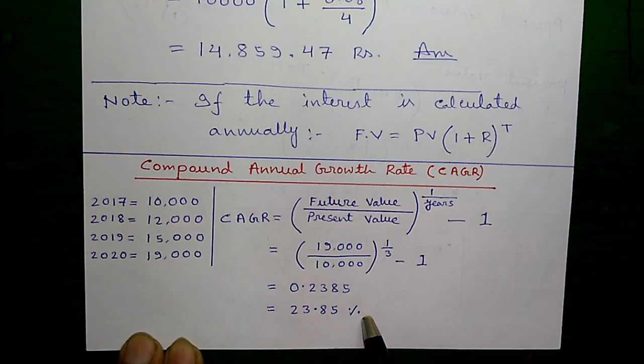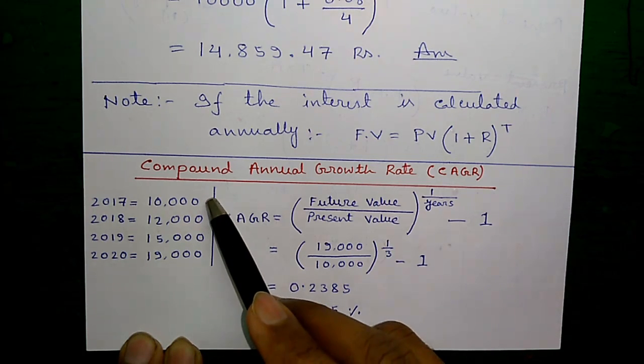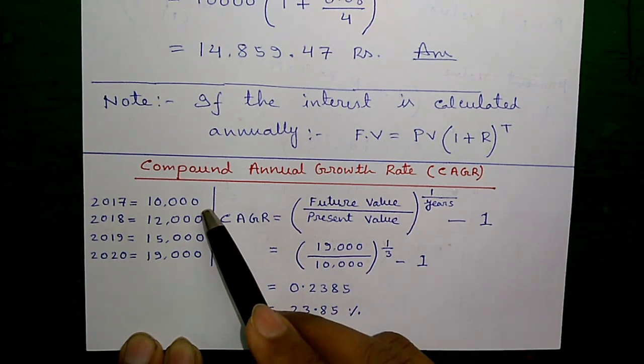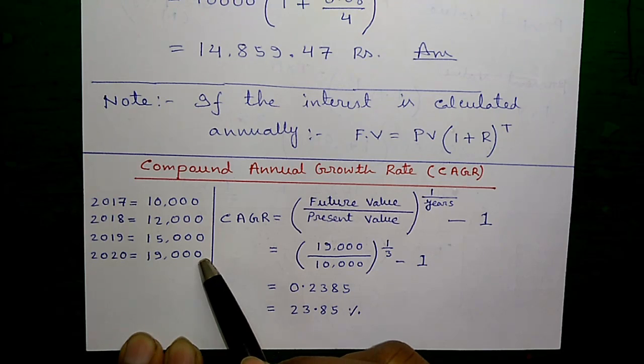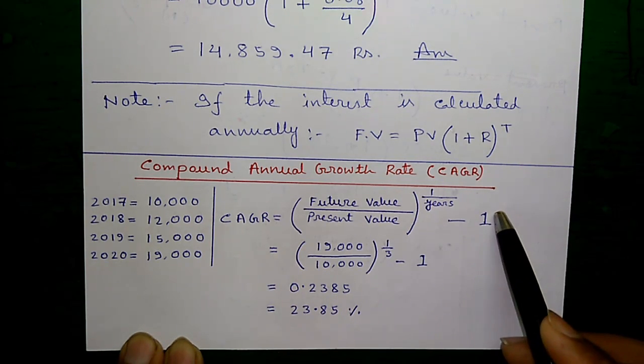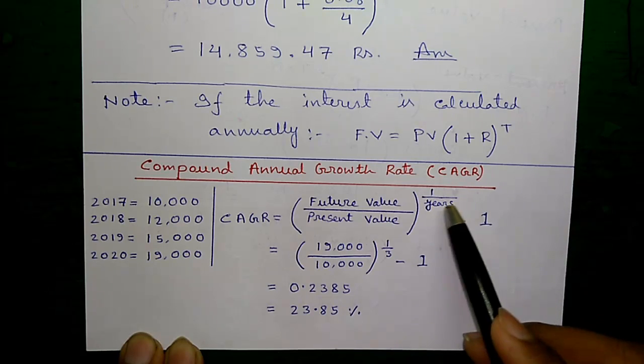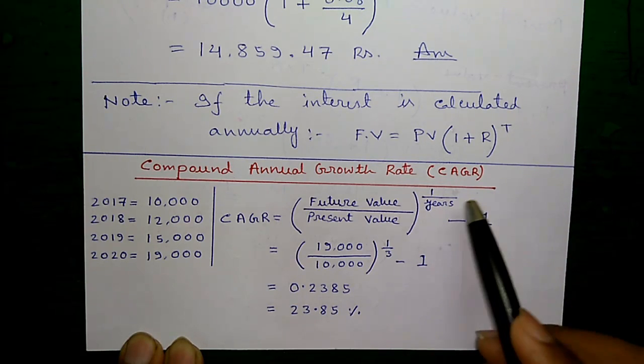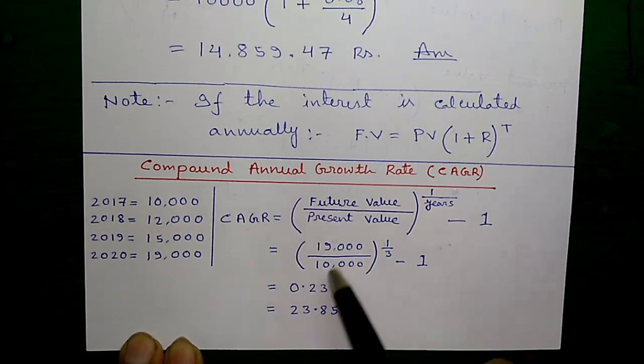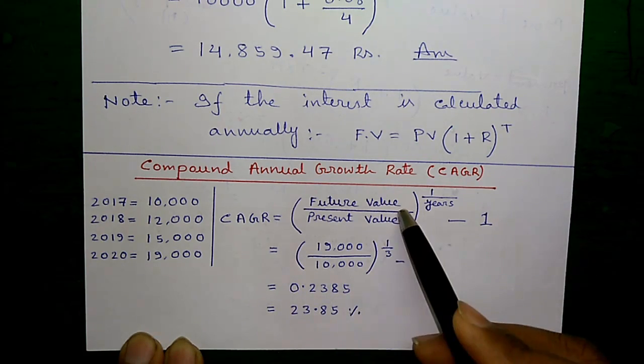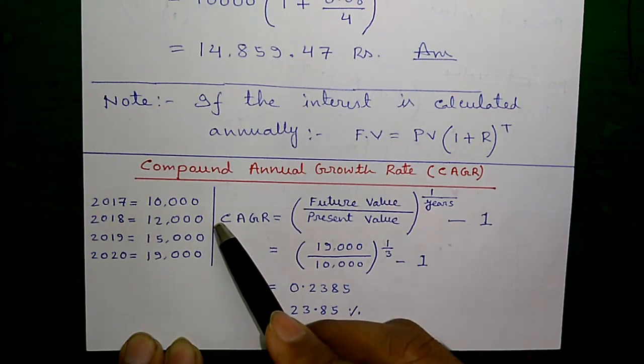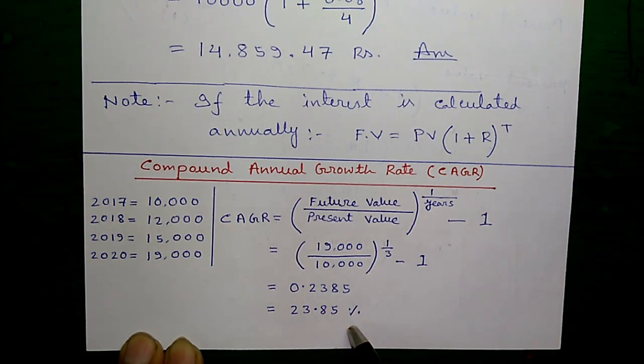CAGR is useful for calculating the return of a single investment over the years. Also, CAGR is useful for comparing returns of two investments. For example, if you have invested $10,000 in a company portfolio and also $10,000 in a bank fixed deposit with uniform rate of return. After end of three years, you can find the CAGR of both investments and check which has given you the maximum return. Now, let's calculate CAGR.